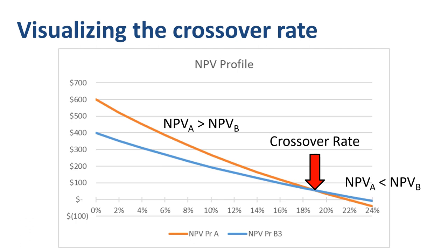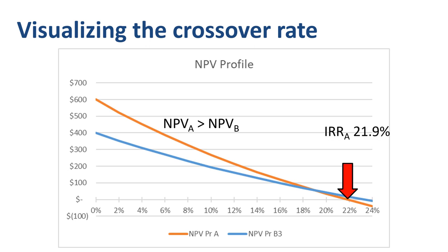The NPV profile graph gives us additional information: the discount rates that make each project's NPV equal to zero — in other words, their IRRs. For project A, the IRR is 21.9%, where the orange line intersects the horizontal axis. For project B, the IRR is 23.4%, where the blue line intersects. So while the IRR for project B is higher than that of project A, the NPV of project A is higher than that of project B for discount rates up to 19%.